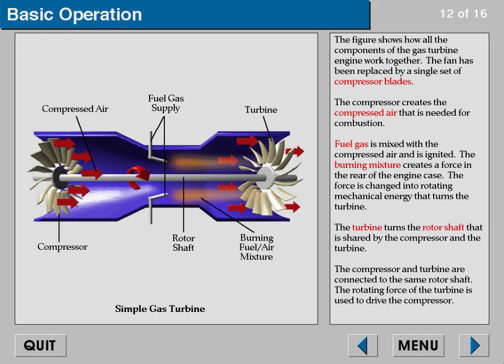The figure shows how all the components of the gas turbine engine work together. The compressor creates the compressed air that is needed for combustion. Fuel gas is mixed with the compressed air and is ignited; the burning mixture creates a force in the rear of the engine case. This force is changed into rotating mechanical energy that turns the turbine. The turbine turns the rotor shaft that is shared by the compressor and the turbine, and the rotating force of the turbine is used to drive the compressor.